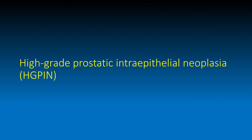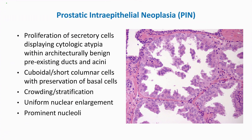High-grade prostatic intraepithelial neoplasia is a proliferation of secretory cells displaying cytologic atypia within architecturally benign, pre-existing ducts and acini. So the lesion is architecturally benign but cytologically malignant. The glands are lined by cuboidal to short columnar cells, there is preservation of the basal cell layer, and there is some degree of crowding and stratification of the nuclei, as seen in the microphotograph on the right side.